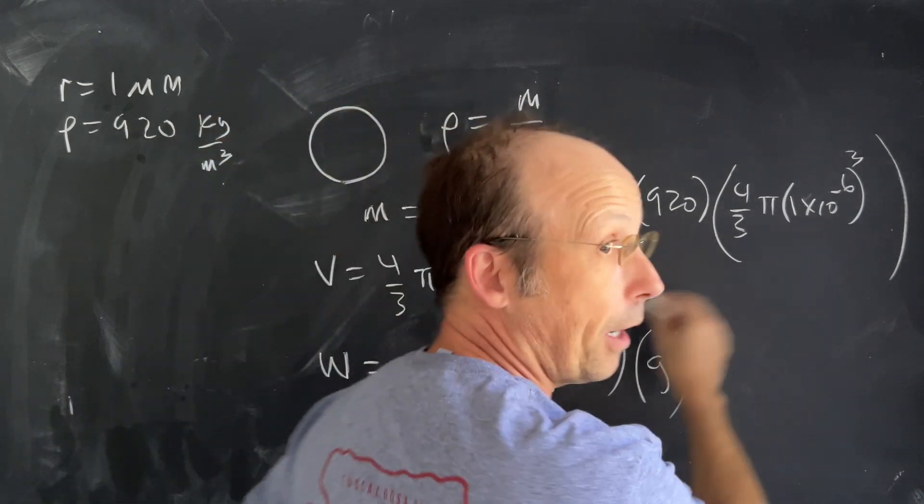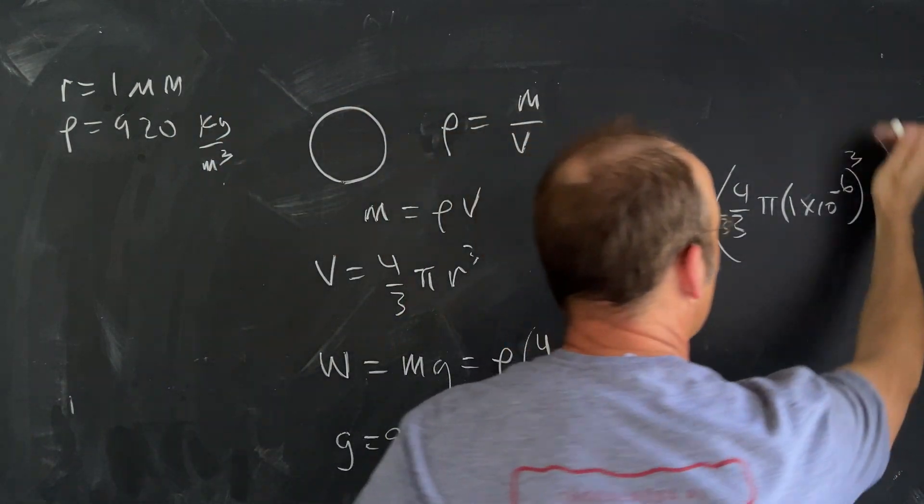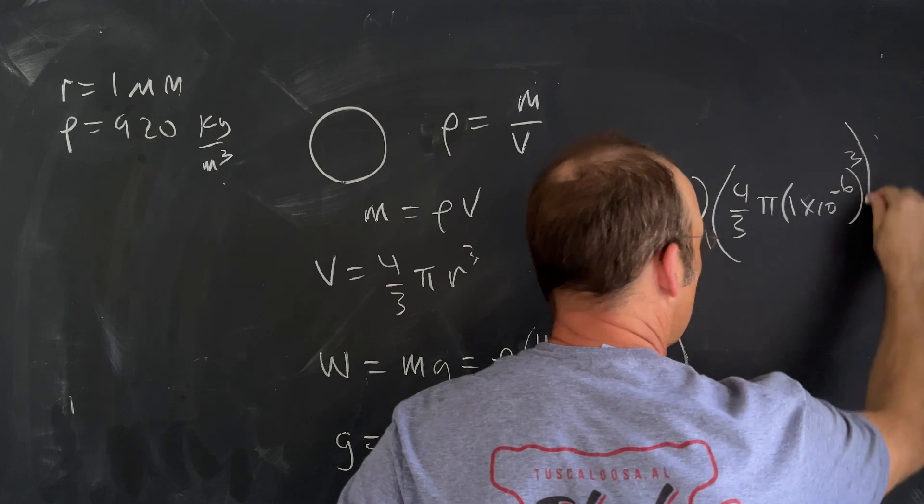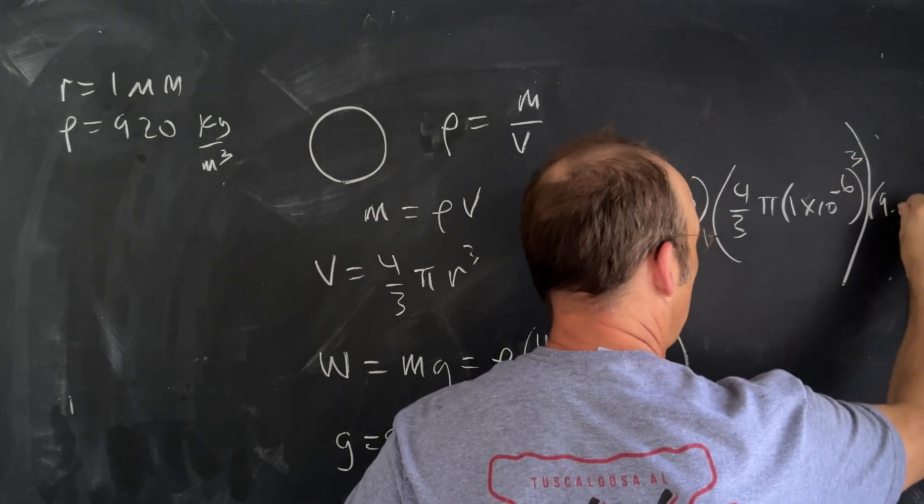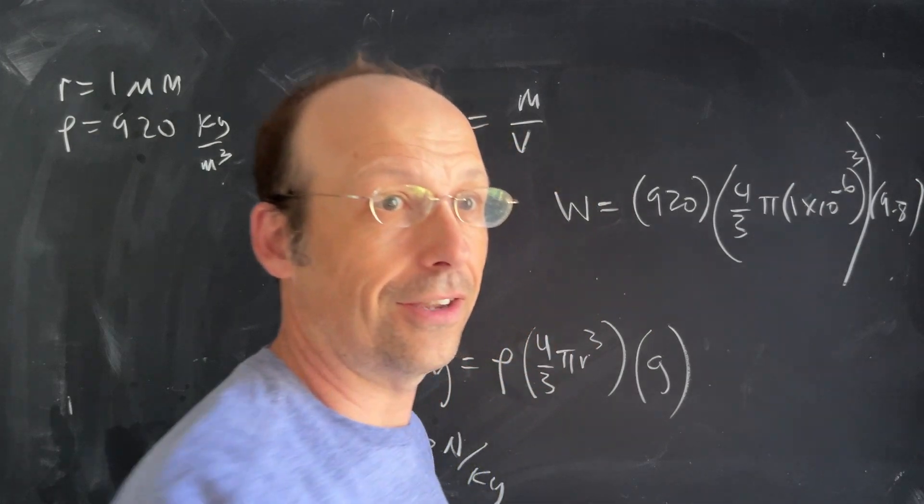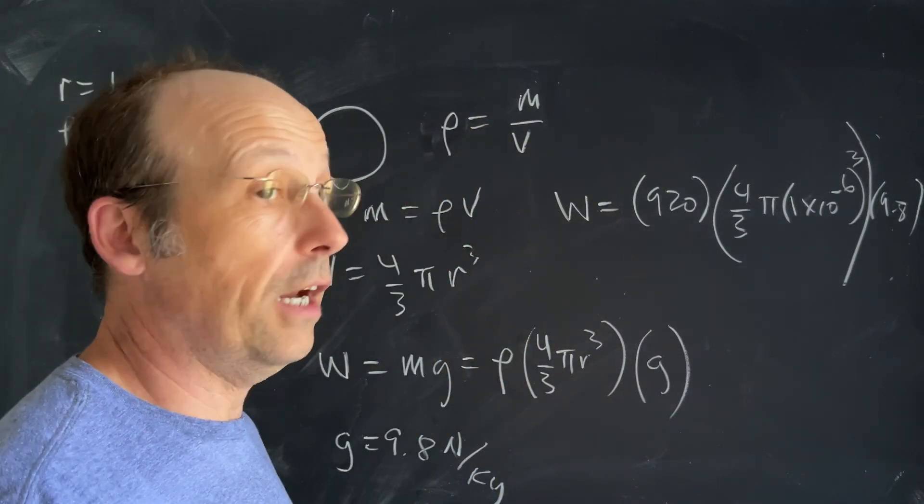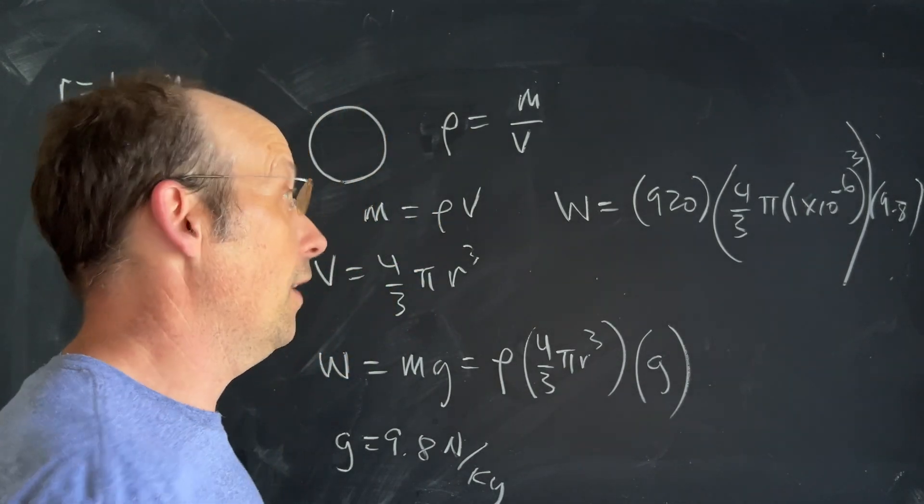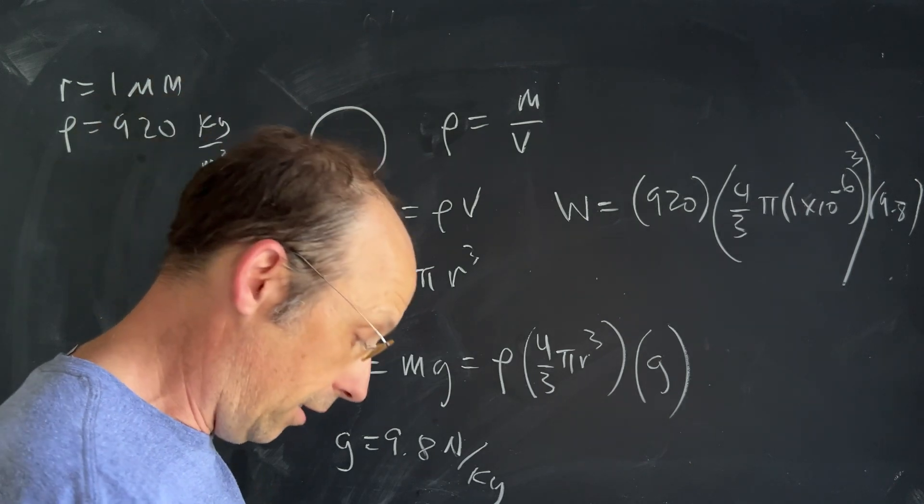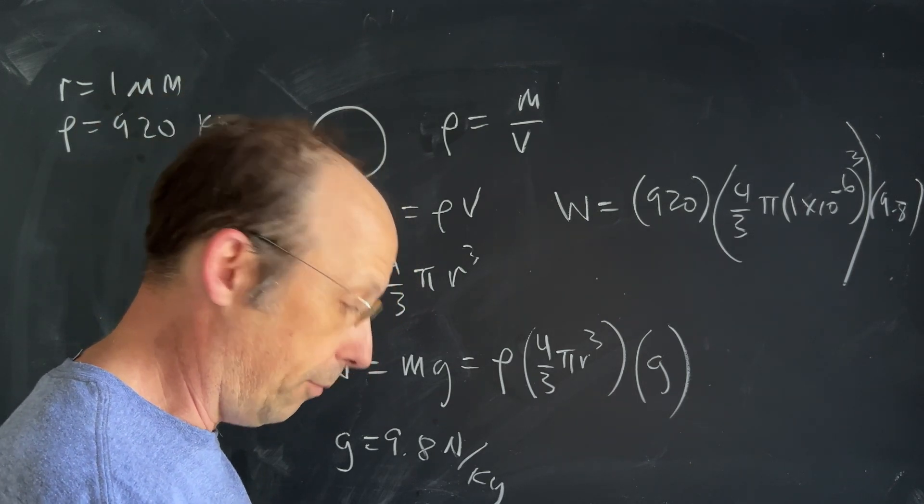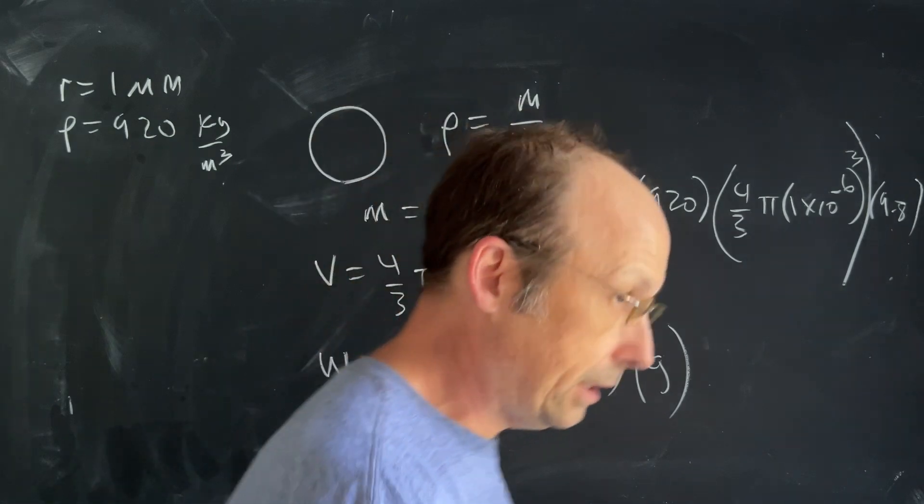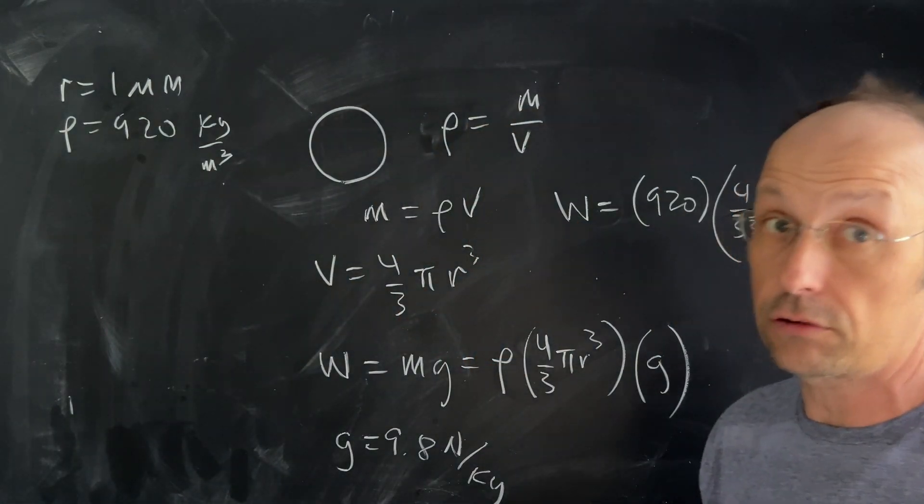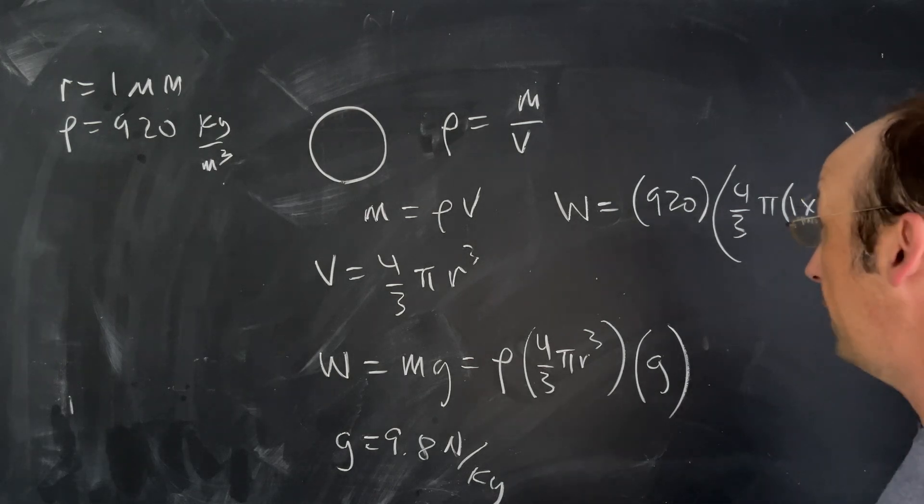Then I have to multiply by 9.8. Let's calculate this. There's a great opportunity for you to practice using your calculator because you're going to make a mistake if you're not careful. I'm using my calculator which is RPN notation so it's a little bit different than yours but that's fine.